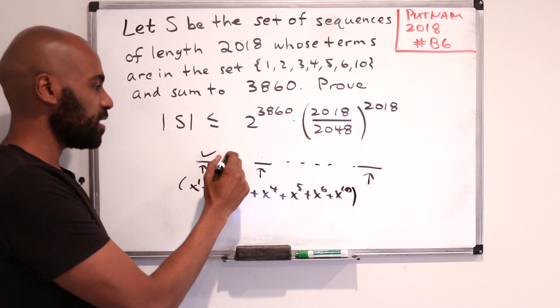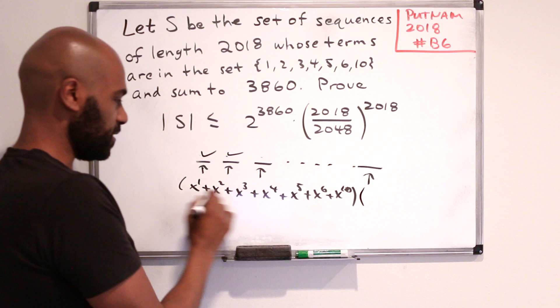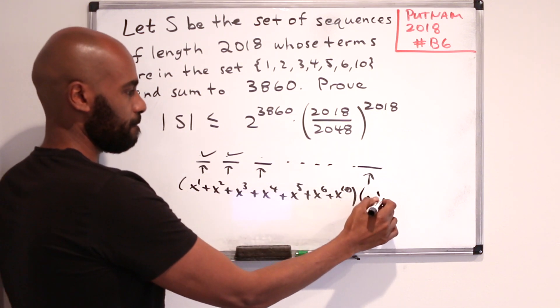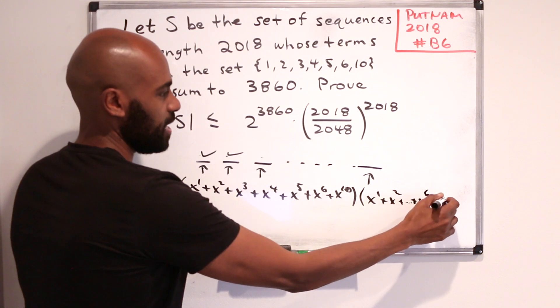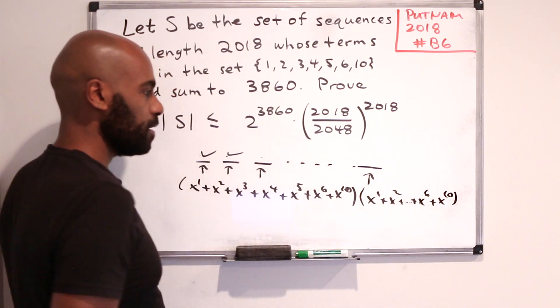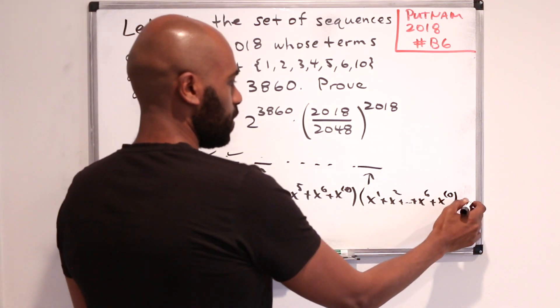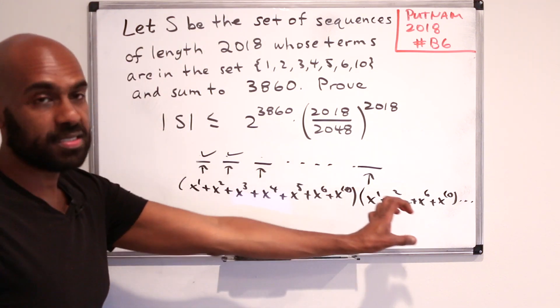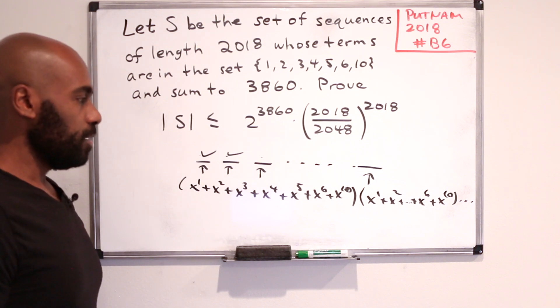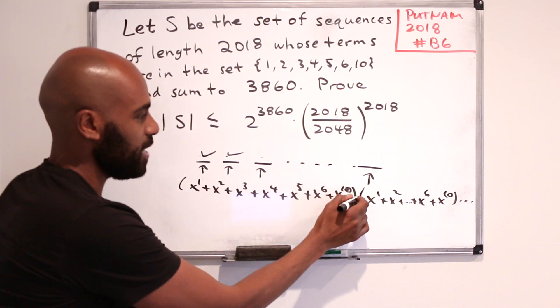Now for this next slot we're going to do the same thing. We'll have this same polynomial. I'll just write dots here to x to the sixth and then x to the tenth. I'm going to have the same thing for every single one of these. So we have 2018 polynomials, they're all the same polynomial, and the observation to make, which is an observation we make when we think about generating functions, is to look at the product of these.